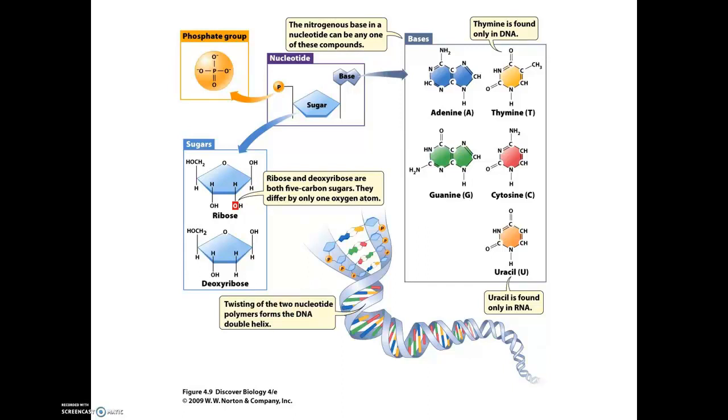When we look at the possible nitrogenous bases, the bases for DNA are adenine, thymine, cytosine, and guanine, or A, T, C, and G, whereas the nitrogenous base uracil is found only in RNA. The nitrogenous base thymine is only found in DNA. Adenine, cytosine, and guanine are found in both.